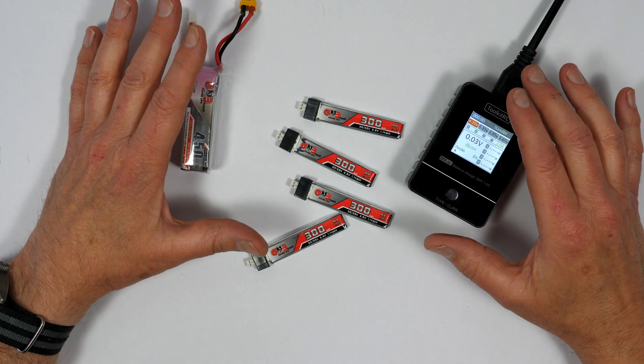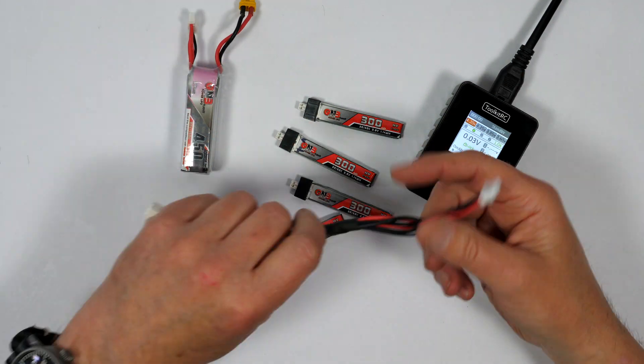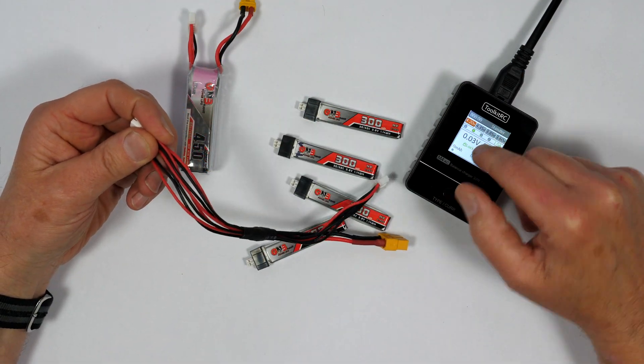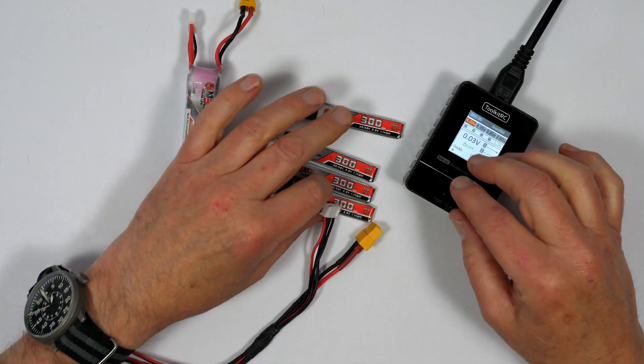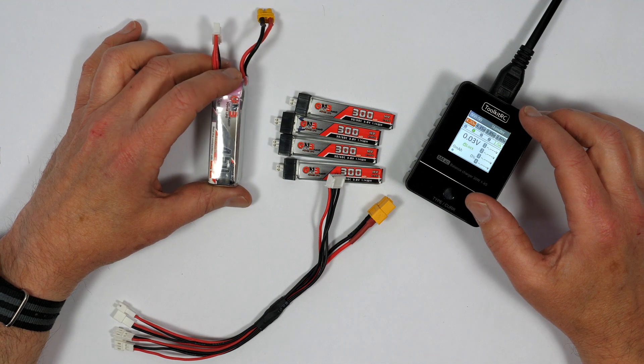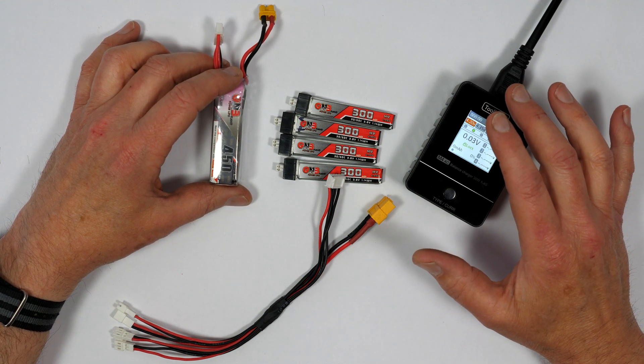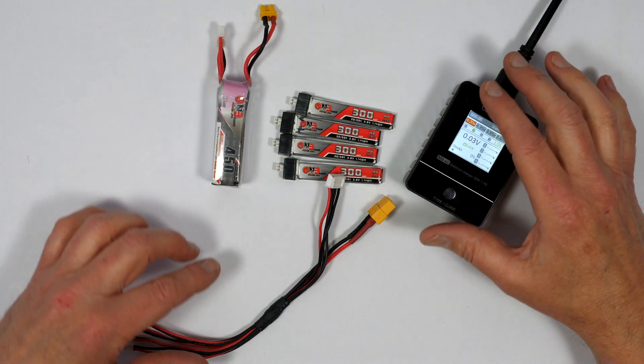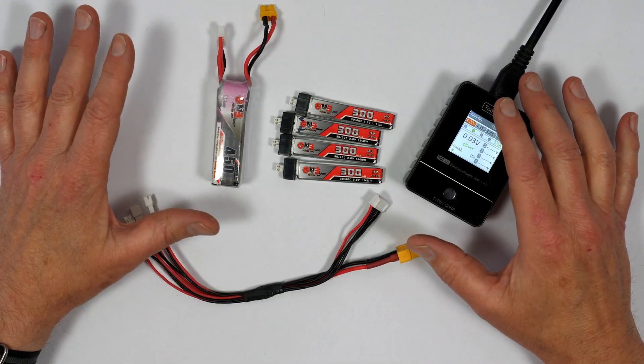These chargers don't really cater for 1S LiPos because there's only one cell and there's nothing to balance. So I'll show you how to use a simple cable like this to fool a balanced charger into thinking that these four 1S LiPos are like a single 4S LiPo. I think you can see where this is going—feel free to jump to the next chapter. But if not, here's a quick explanation.